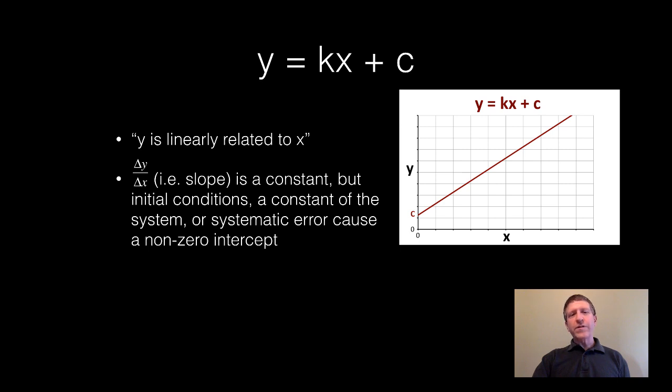And in this type of relationship, we do have a constant slope. In other words, delta y over delta x is a constant. But there may be some initial conditions, there may be a constant of the physical system, or there may be even some systematic error which causes a non-zero intercept.